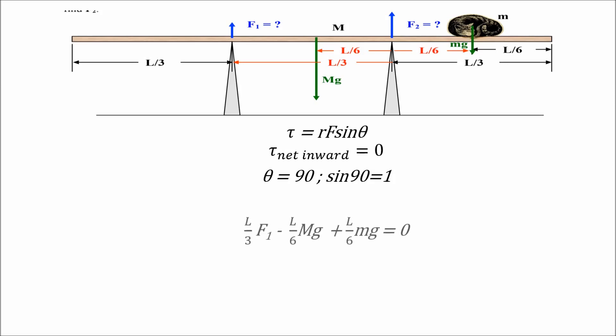One-third length times F1 minus one-sixth length times the mass of the plank times gravity plus one-sixth length times the mass of the cat times gravity is equal to zero.